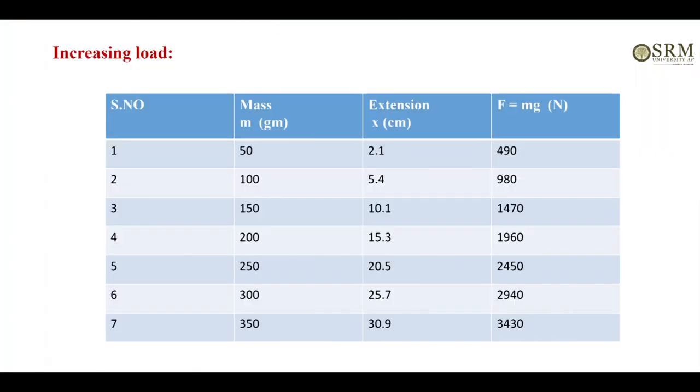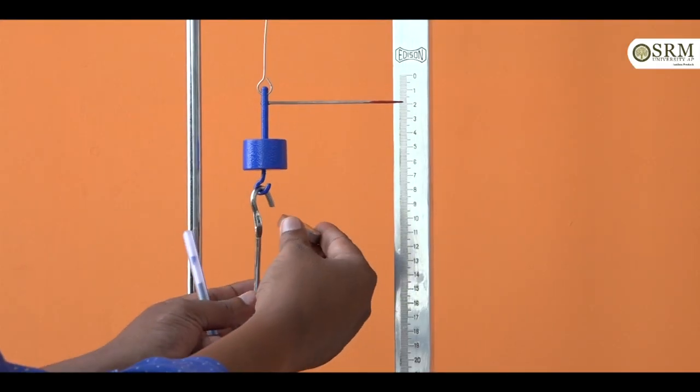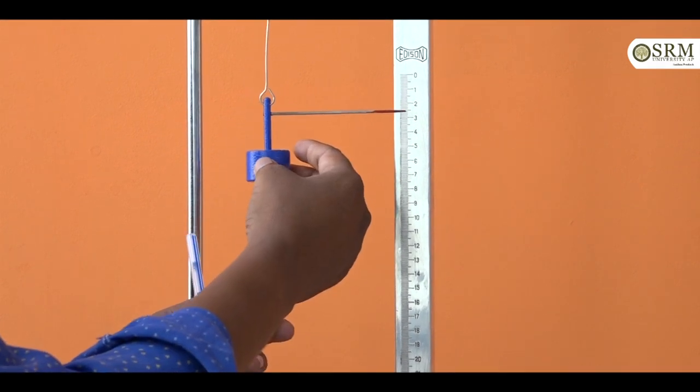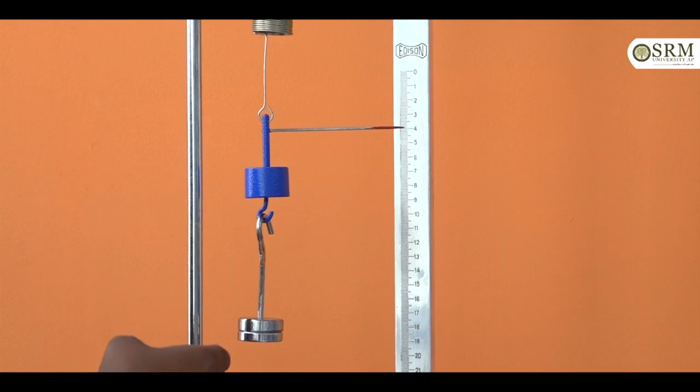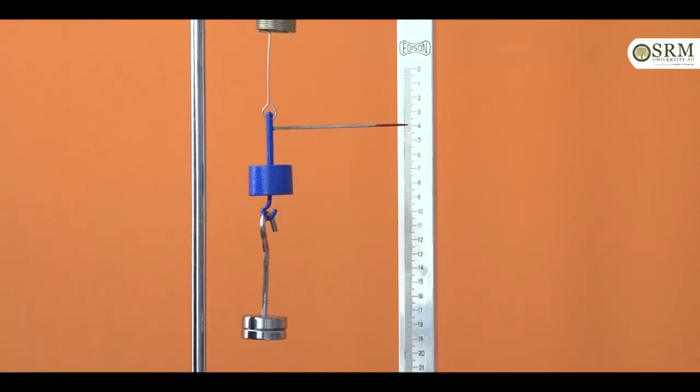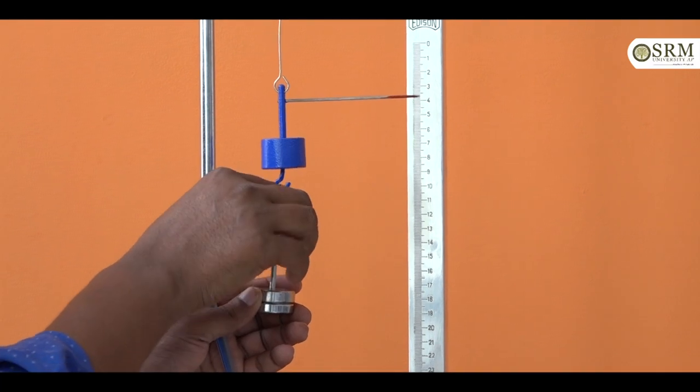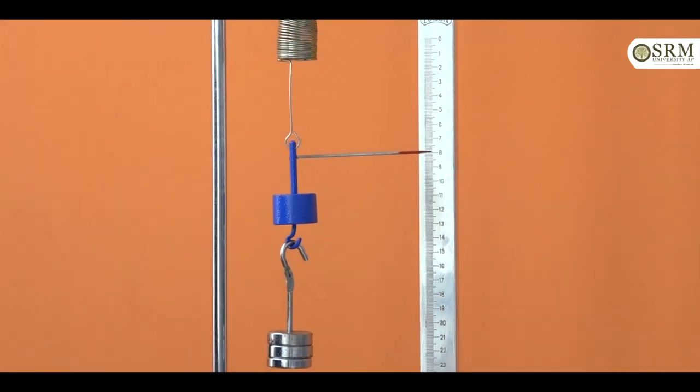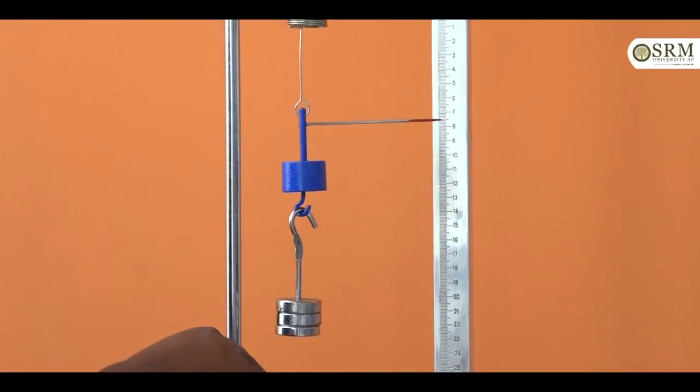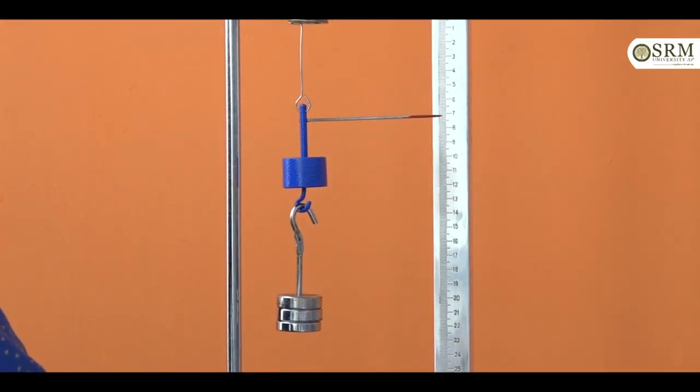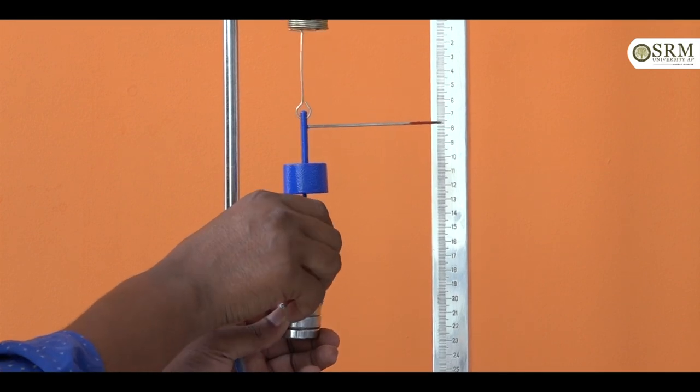In increasing table, first this is 50 grams of mass corresponding that extension. Later we will add another 50 grams of mass. That is the 100 grams corresponding extension. Again we will increase another 50. In this way we will find out increasing of mass corresponding extension up to 300 grams.